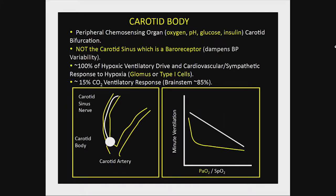As Dr. Dahan introduced, the carotid body is the peripheral chemosensing organ important in regulation of breathing. It senses oxygen, pH, glucose, and even insulin in the arterial blood. Not to be confused with the carotid sinus, which has baroreceptor function protecting you from blood pressure variability. It mediates 100% of the hypoxic ventilatory drive, as well as contributing to the sympathetic response to hypoxia. With decreasing PaO2, there's a curvilinear ventilatory response, and a linear relationship with oxygen saturation.